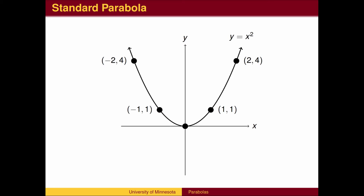The standard parabola y equals x squared is symmetric with respect to the y-axis. The y-axis divides the parabola into two identical branches. The y-axis is therefore the axis of symmetry.